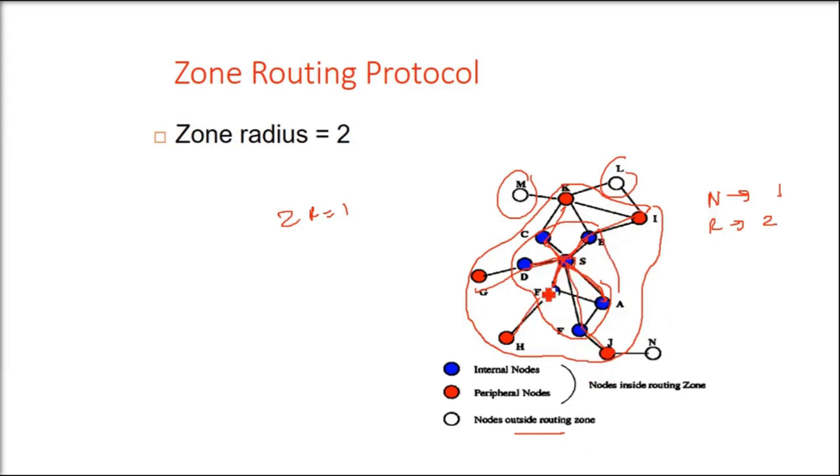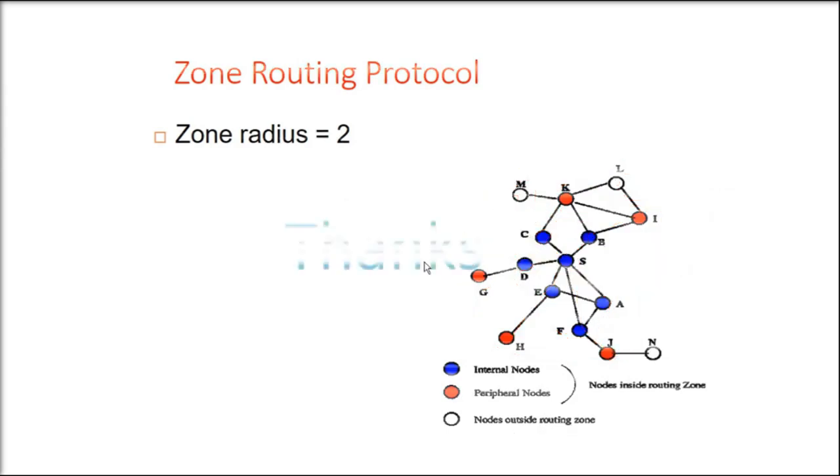All inside will use the proactive route protocols. And outside, between zones, it will use the reactive protocols. So there will be different types of protocols working here.